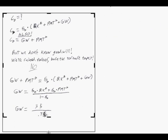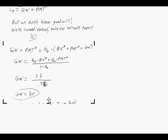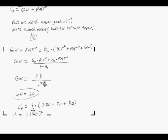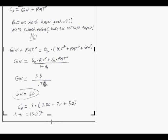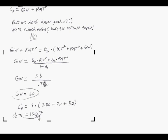We scroll down and see we found goodwill — it's 50. We move down and plug it into the other equation: Danville's capital balance equals 0.3 times the beginning book value of the partnership, which was 280, plus his payment into the partnership, which was 70, plus the goodwill, which was 50. And we reach a number — it's $120,000. So that is the capital of Danville after the event: $120,000. There you go, very fun.